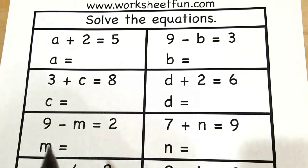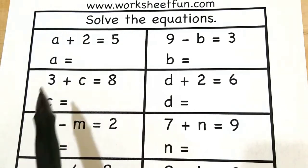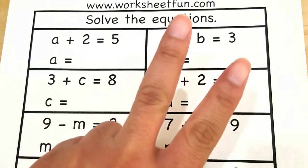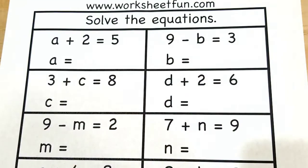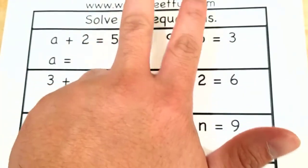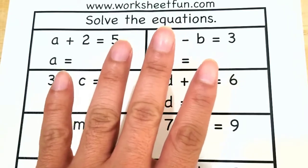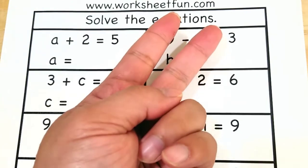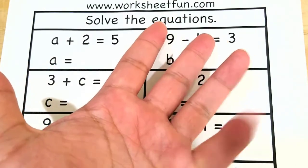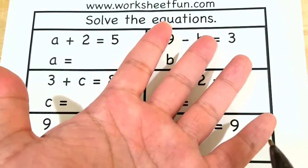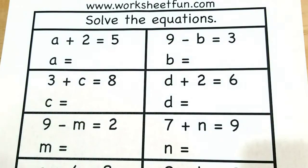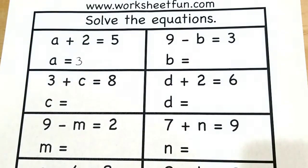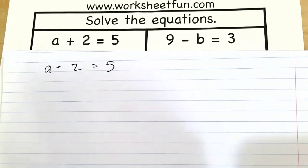The first way is you can simply use your fingers. For example, number one: we have a plus two equals five. That means you start with two and then count how many more to get to five — three, four, five. That means we needed three more fingers to get to five, so a is equal to three.